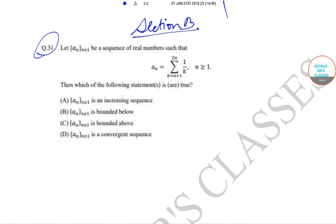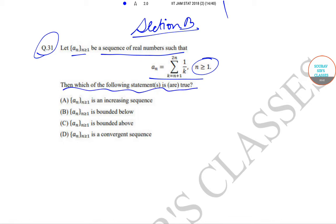In question number 31, let a_n where n ≥ 1 be a sequence of real numbers such that a_n = Σ(1/k) where k goes from n+1 to 2n, for n ≥ 1. Which of the following statements is or are true? Option A: a_n is an increasing sequence. Option B: a_n is bounded below. Option C: a_n is bounded above. Option D: a_n is a convergent sequence.